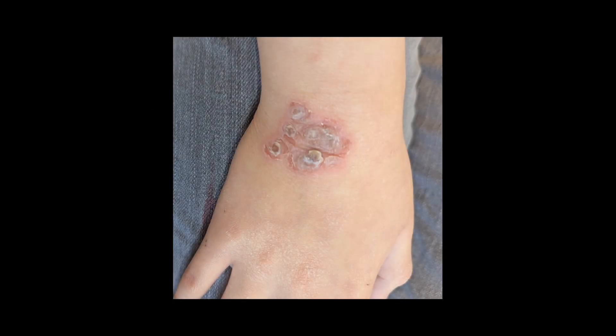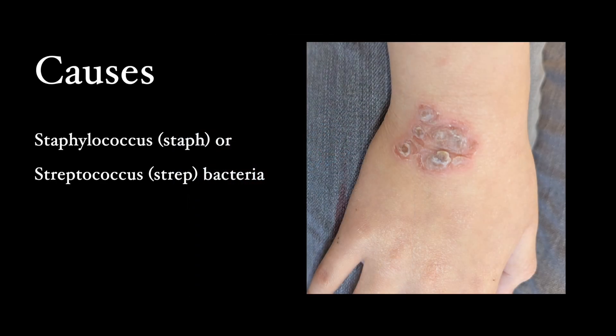Today's topic is impetigo, a kind of skin infection inspired by a 10-year-old patient I saw months ago. Impetigo is caused by a bacteria called Staphylococcus aureus, or sometimes by Streptococcus pyogenes, also called Group A strep — the same bacteria that causes strep throat. So the same organism that causes throat infection can, for some reasons, also cause a skin infection called impetigo.